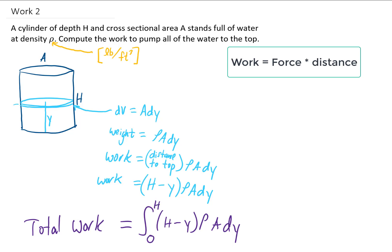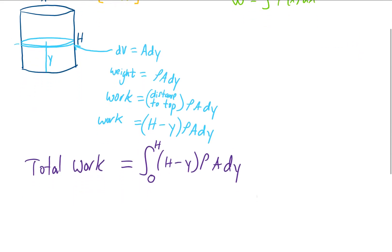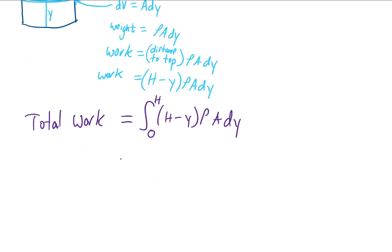And since the height of the water in this tank can be anywhere from y equals 0 to y equals h, we'll add all of those little pieces of work up between y equals 0 and y equals h. And we'll have the total work needed to remove all of the water from that tank.